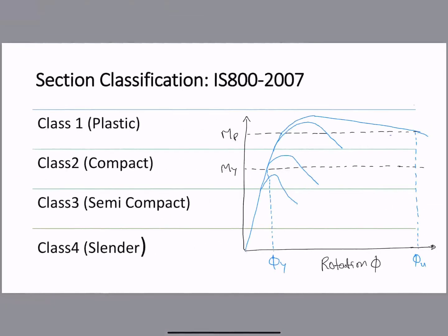The section classifications are defined as Class 1, Class 2, Class 3, and Class 4 — or engineering terms: plastic, compact, semi-compact, and slender — based on the behavior of the element. Looking at the stress-strain curve, when any member is tested in a laboratory, the behavior differs based on which class the section belongs to.